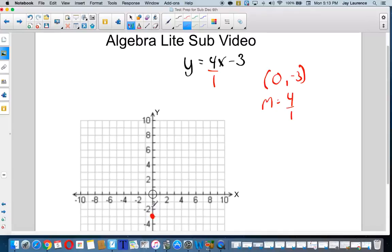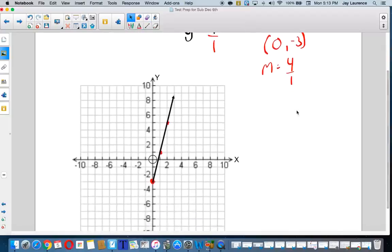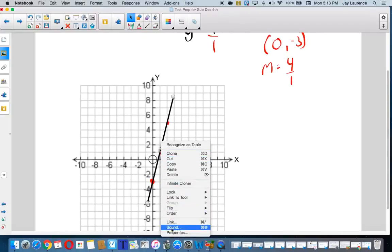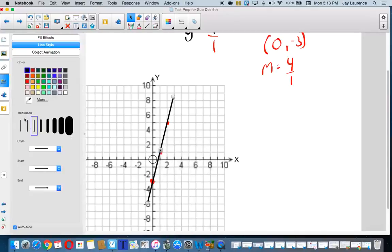And then I'm going to rise 1, 2, 3, 4, and run 1. And rise 1, 2, 3, 4, and run 1. And I love the fact that my three points all look like they're on the same line, they better be. And so now I'm going to use a nice straight edge, I use my line tool. You will use a ruler, they should be out. And I'm going to draw my line, and I'll change the color there, just so it stands out a little bit, and put arrowheads on both ends.